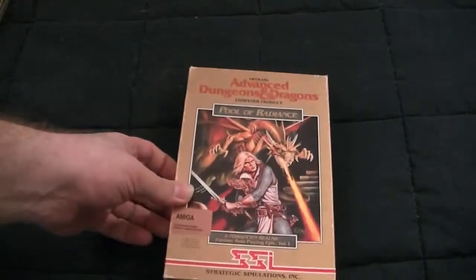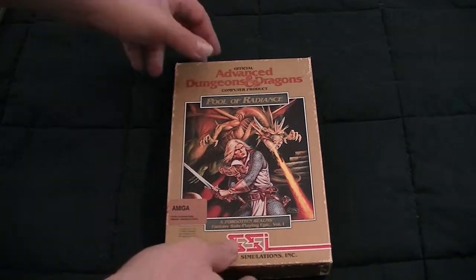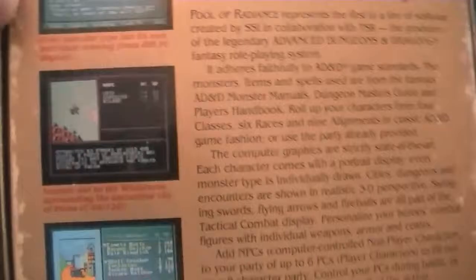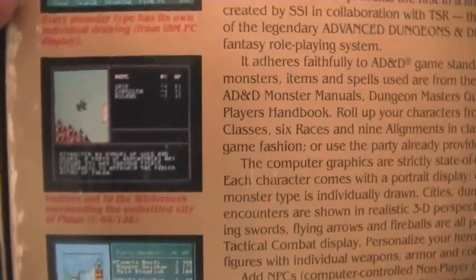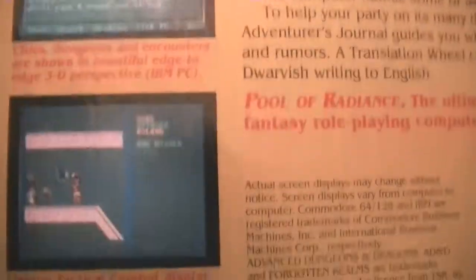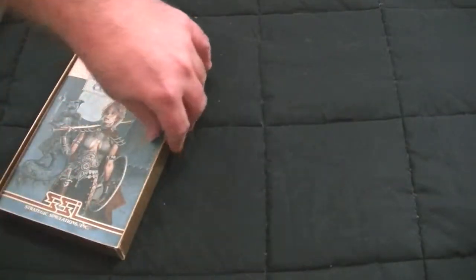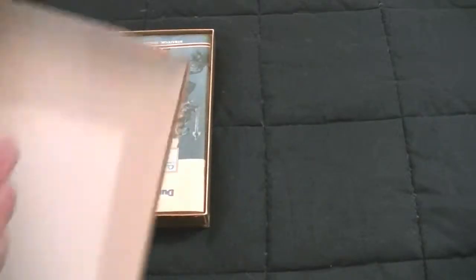So this one is a classic. Advanced Dungeons and Dragons Pools of Radiance. Commonly referred to as a gold box. These were the de facto standards of PC gaming. Got it upside down. Hang on. There you go. These were the standards back then. And it's actually kind of cool. If you can imagine Final Fantasy Tactics before it was Tactics.